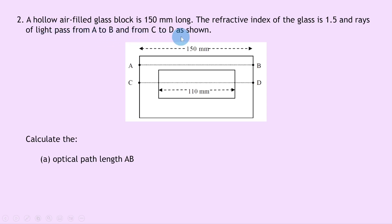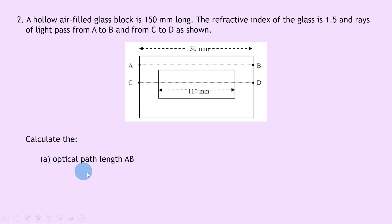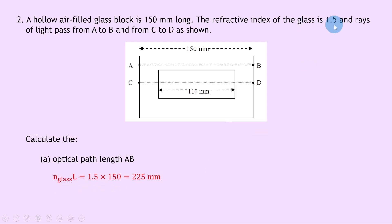Question 2 says a hollow air-filled glass block is 150 millimeters long. The refractive index of the glass is 1.5, and rays of light pass from A to B and from C to D as shown. The ray from A to B passes purely through the solid glass block, while the ray from C to D passes through glass, then air, then glass again. Part A asks to calculate the optical path length AB: N_glass × L = 1.5 × 150 = 225 millimeters.